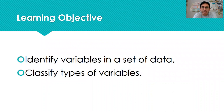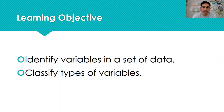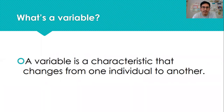We have two learning objectives. The first is to identify variables in a set of data, and you'll soon see how we present data. The second is to classify the different types of variables, and there are two main types that we look at in AP Stats.